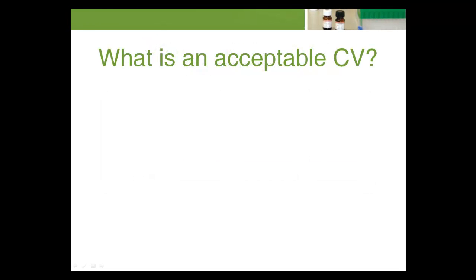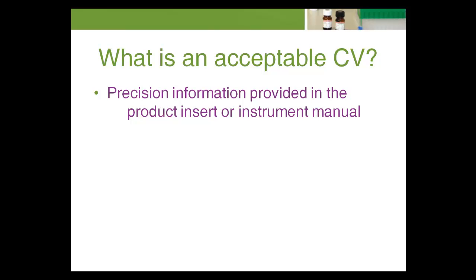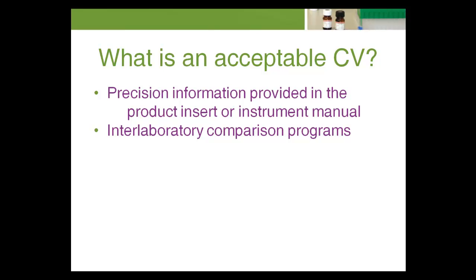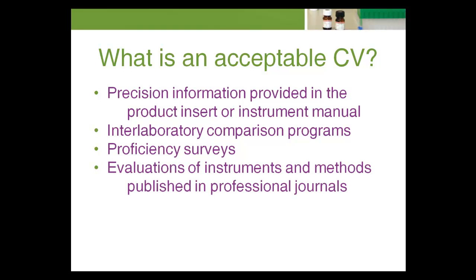The previous examples have shown how CV can be used to compare and evaluate instruments or reagents. So what's an acceptable CV? There are several sources which may be referenced to determine expected levels of precision. These include precision information provided in the product insert or instrument manual, interlaboratory comparison programs, proficiency surveys, evaluations of instruments and methods published in professional journals, and CLIA proficiency limits.